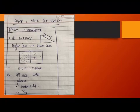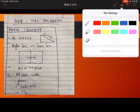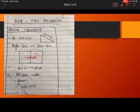First of all, we have to understand what are the different types of transport to understand the pump and leak mechanism. One such transport is called passive transport. Here, the substance moves from higher concentration to lower concentration. There is no energy required, no requirement of energy or ATP. It is also called downhill movement.